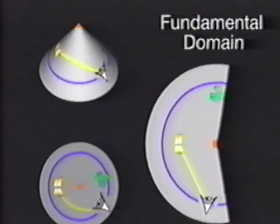This wedge is a building block for the cone and is called a fundamental domain. The two edges resulting from the cut represent a single line back on the cone. Anything crossing one edge reappears at the other.